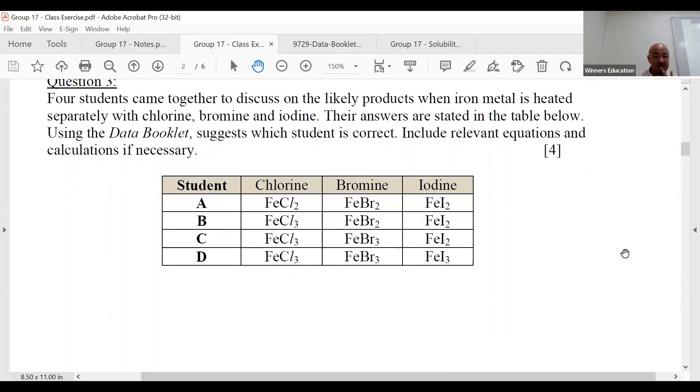To discuss the likely products when iron metal is heated separately with chlorine, bromine, and iodine. The answers are stated in the table below. Using the data booklet, suggest which is correct: A, B, C, or D. This is an MCQ—include relevant equations and calculations if necessary.